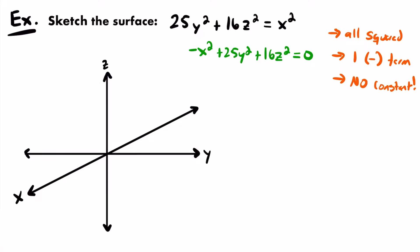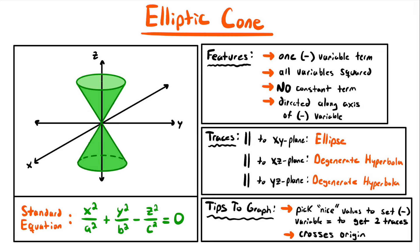That's significant, because if all the variables are squared, there's no constant, and one of those variable terms is negative — that for sure has to be an elliptic cone. An elliptic cone is the only quadric surface where the three variable terms equal zero, there is no constant term, and all three variables are squared.